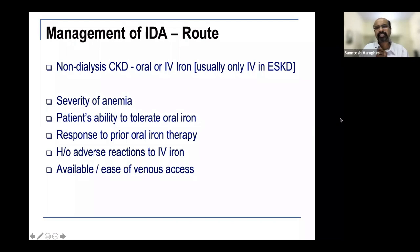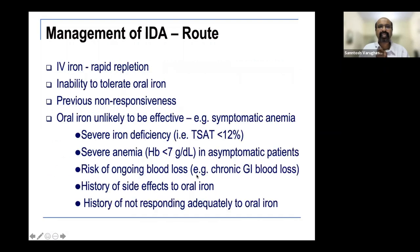In non-dialysis CKD, oral iron may be sufficient or IV iron can be given as needed. In end-stage kidney disease (dialysis patients), IV iron gives the best response. The choice between oral and IV depends on severity of anemia, ability to tolerate iron, prior response to iron therapy, history of adverse reactions (especially to iron dextran), and availability of venous access.